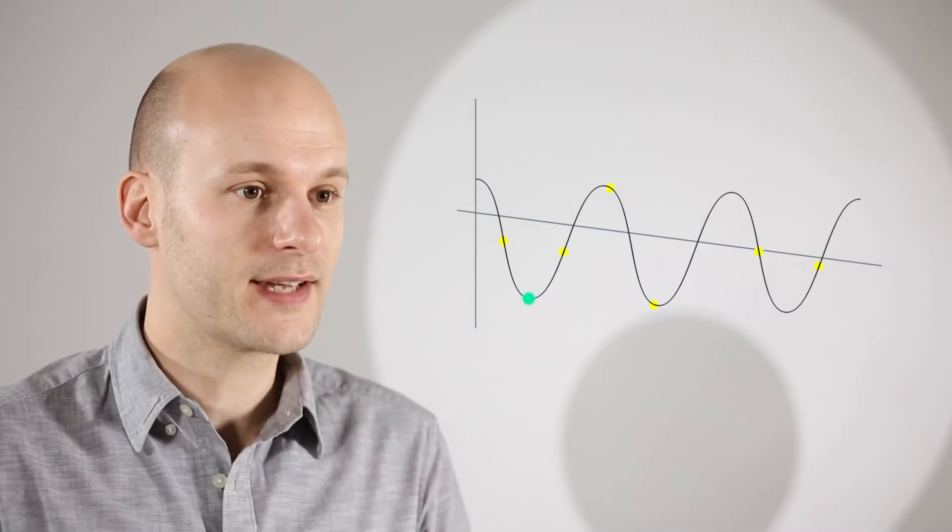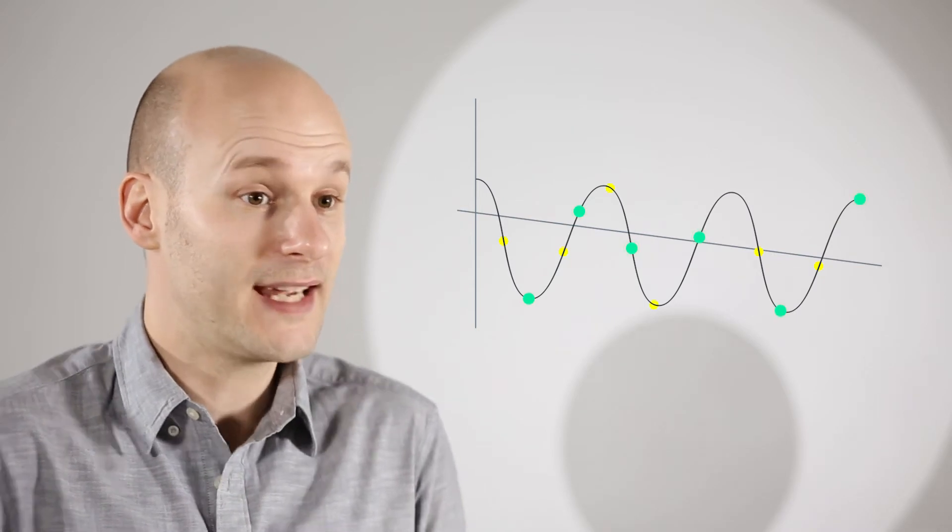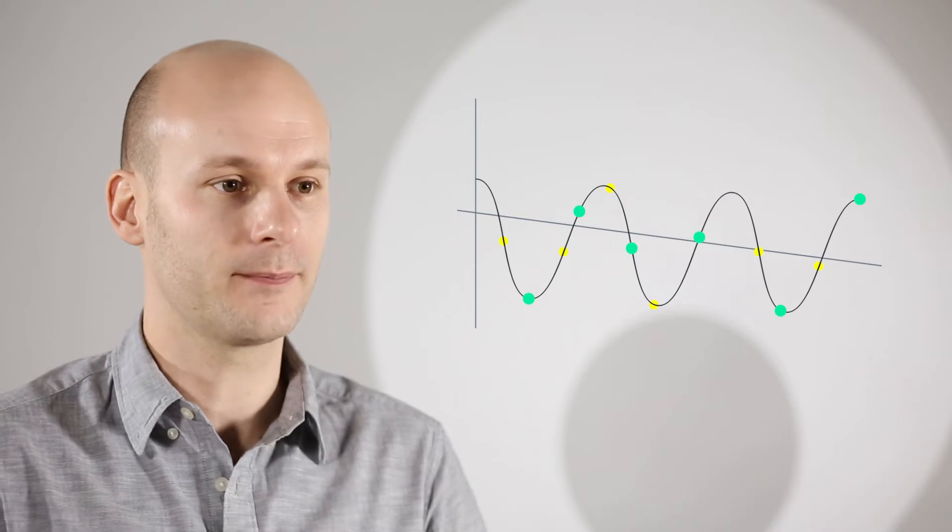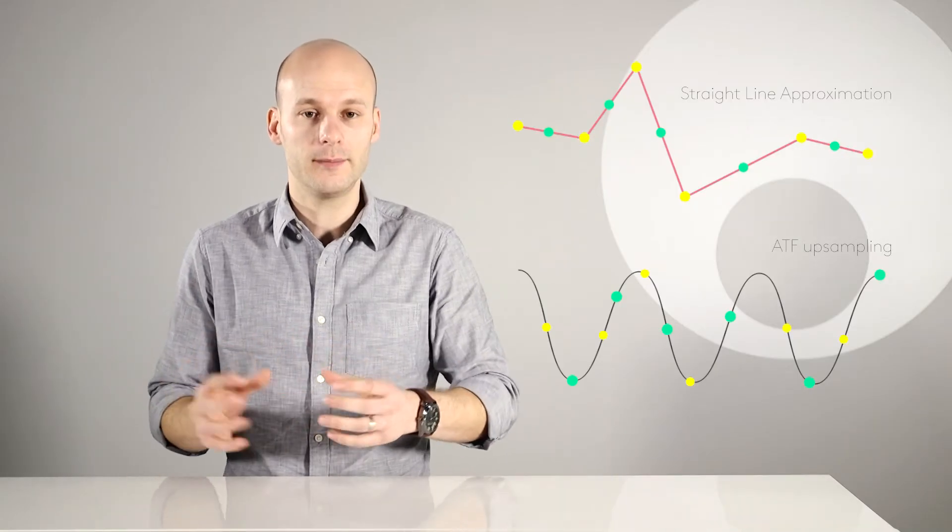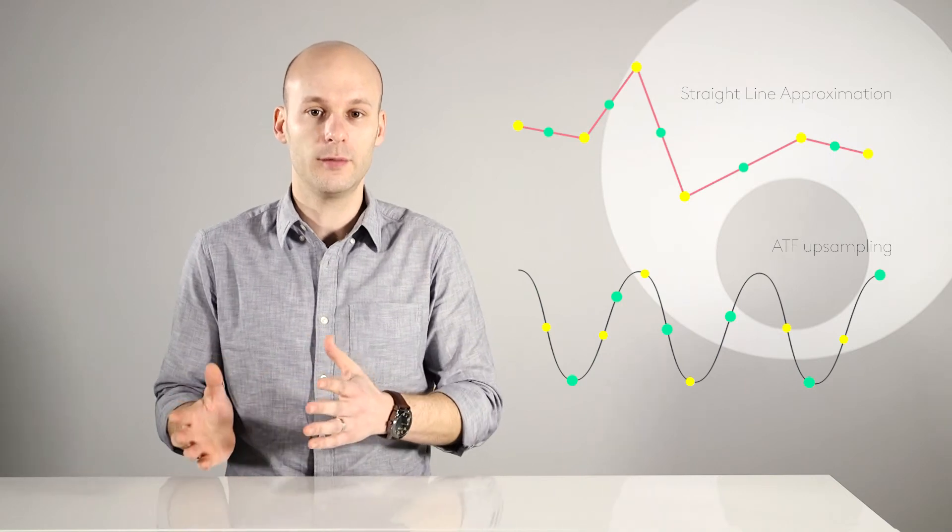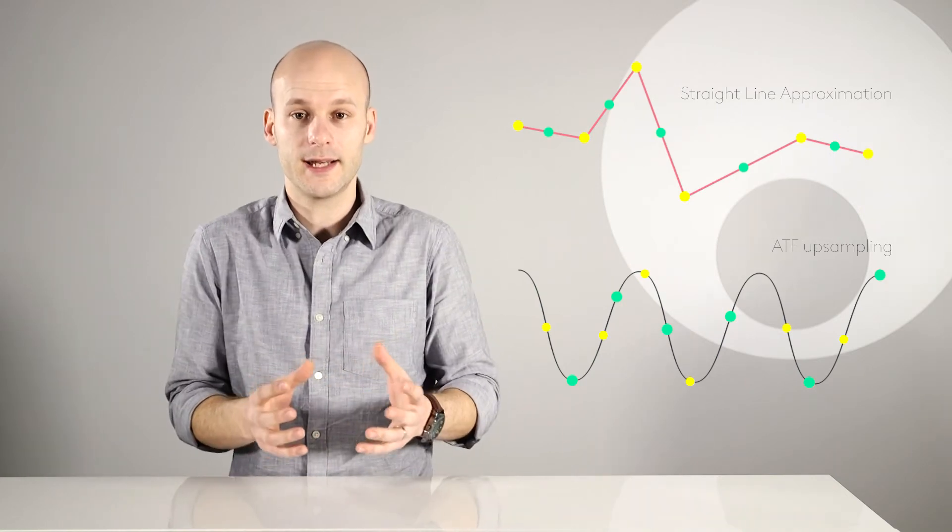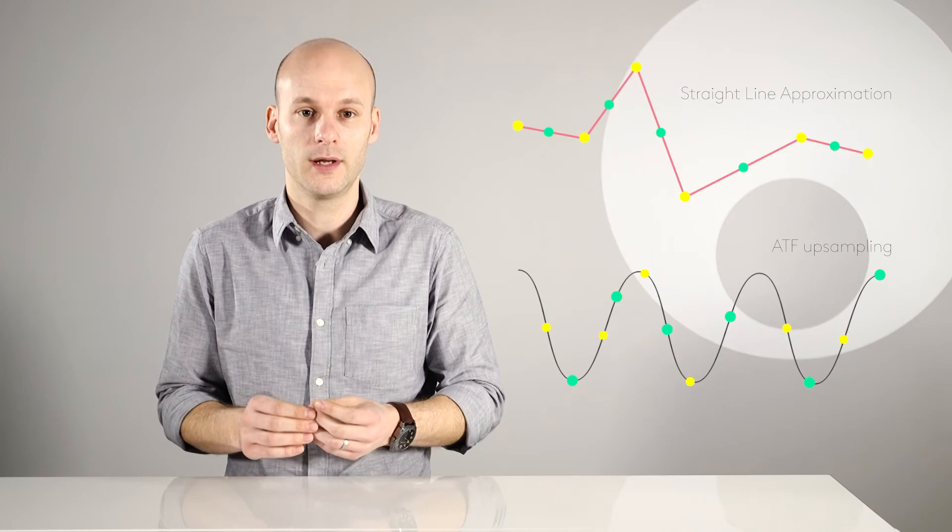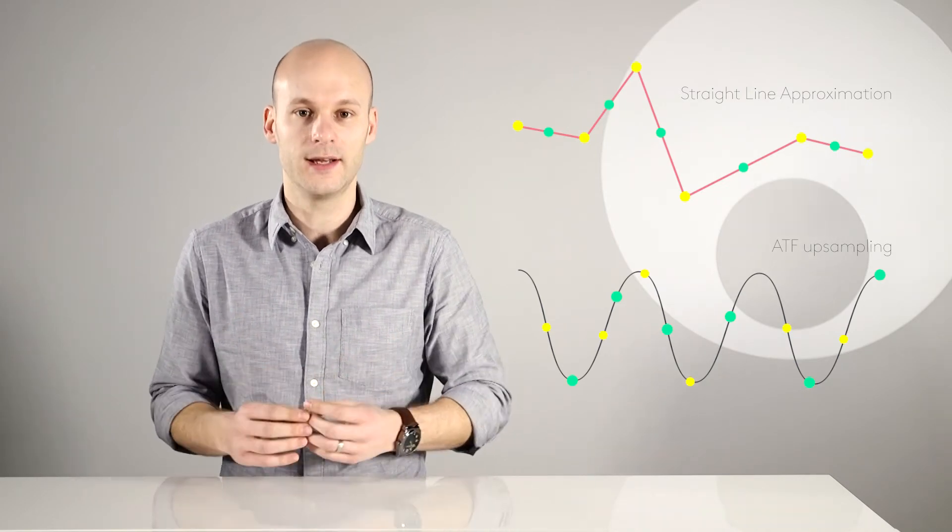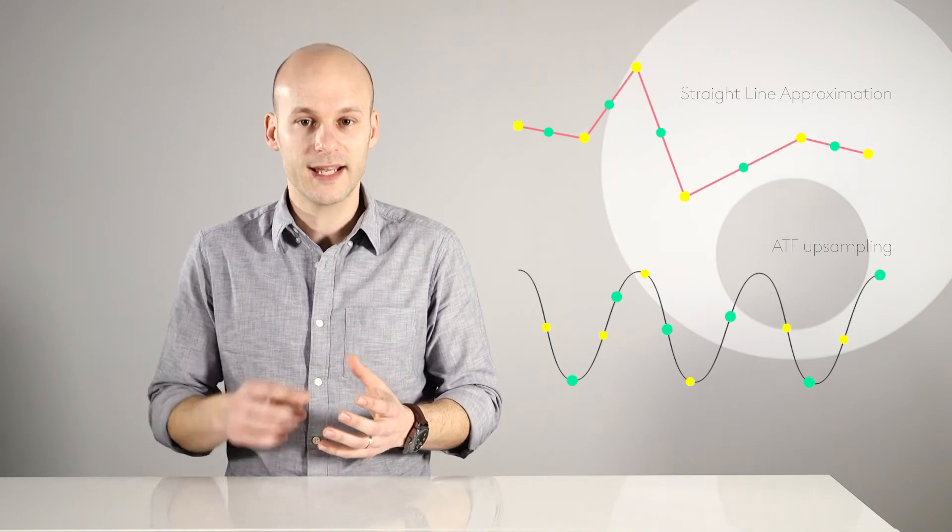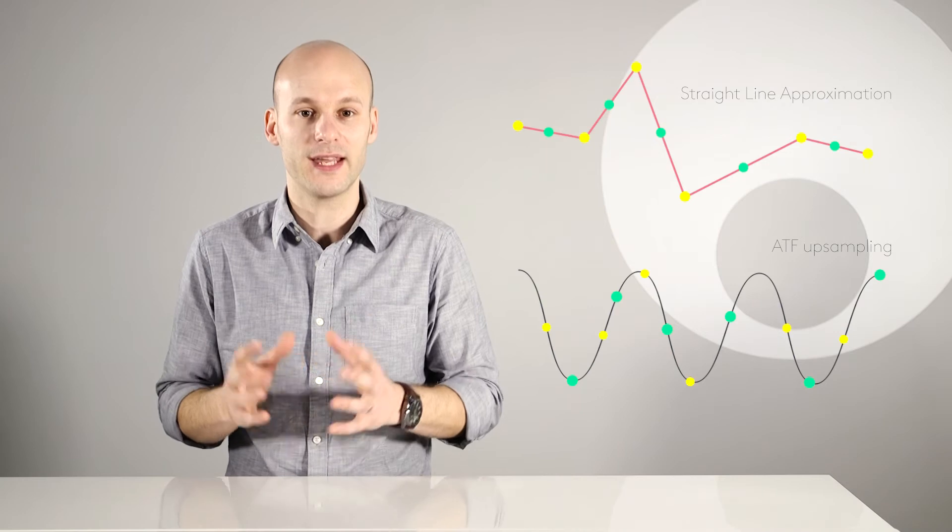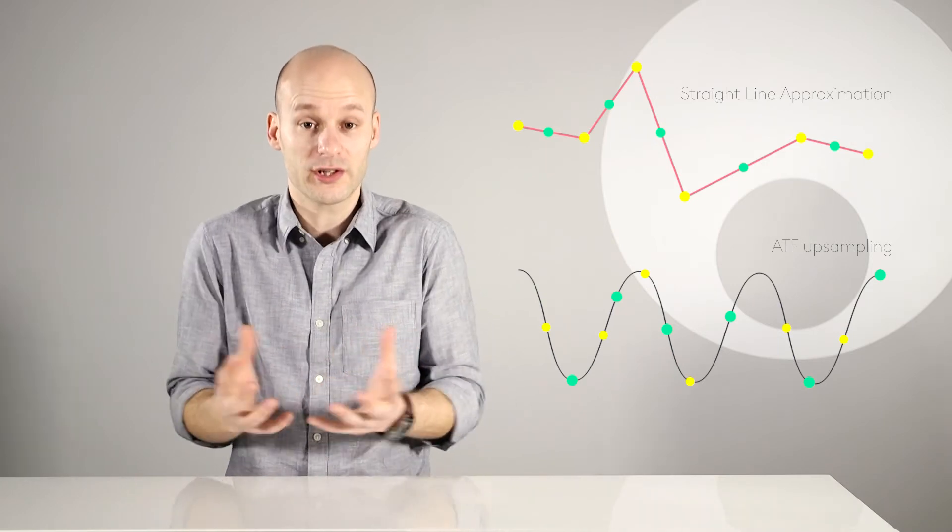The ATF system then takes its upsampled points, its green dots, from the curve rather than from a jagged straight line. When comparing these two examples both have doubled the number of samples turning a 44.1 signal into an 88.2 upsampled signal but the ATF upsampled signal is better because the upsampled points are taken from the curve which means they're much more representative of the original analogue signal that we're trying to reproduce.